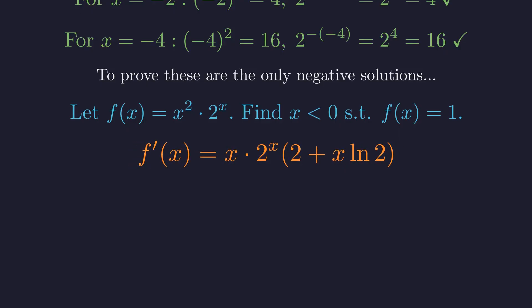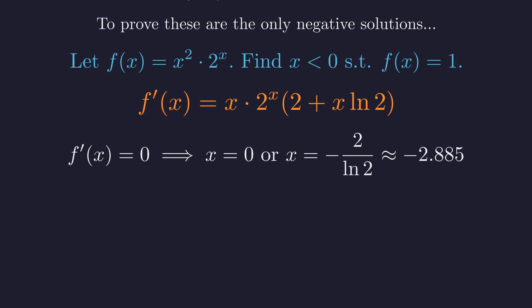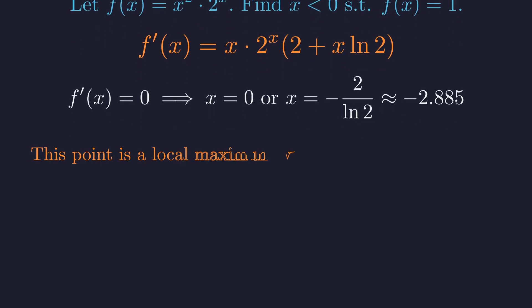This occurs when x is 0, or when 2 plus x times the natural log of 2 is 0. This gives two critical points. Within the negative domain, our only critical point is at x equals negative 2 over the natural log of 2. Analysis of the second derivative shows this is a local maximum. The function's value at this peak is approximately 1.126.